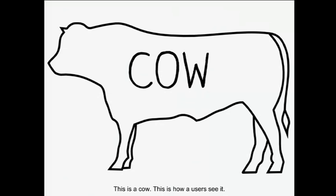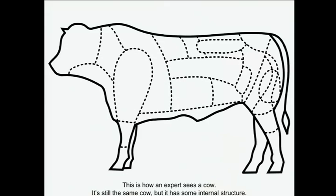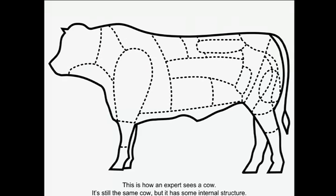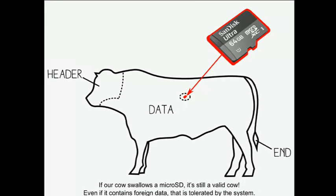Now let's talk about something different: a cow. This is a cow — this is how normal users see it. This is how an expert sees a cow: still the same cow, but it has some internal structure. This is the German and French standard of the internal structure of a cow. One important fact for what comes later: if our cow swallows a micro SD, it's still a valid cow — even if it contains 64 gigabytes of foreign data, it's still a valid cow from the outside.